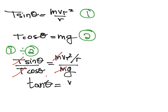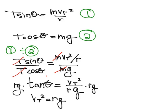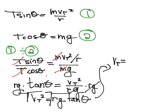So I have tan theta equals vt squared over rg. Now if I want to get vt by itself, I'm going to multiply both sides by rg, and I have vt squared equals r times g tan theta. My final step is to take the square root of both sides, and I end up with my tangential velocity equals the square root of r times g tan theta.